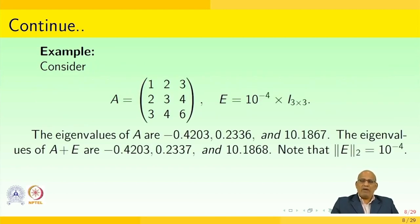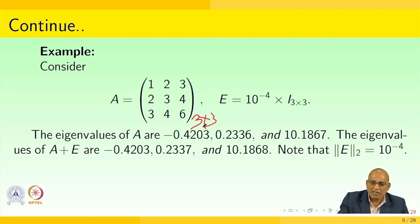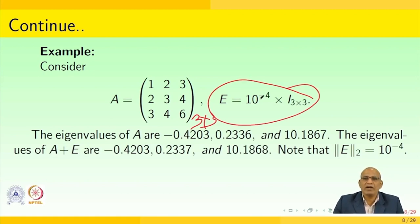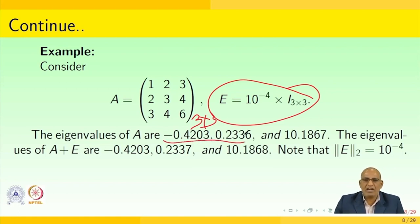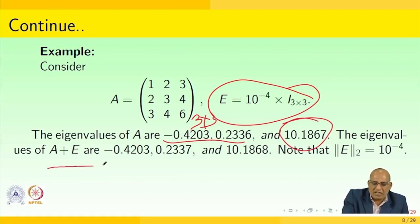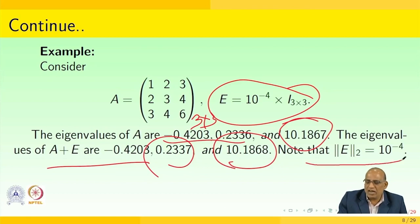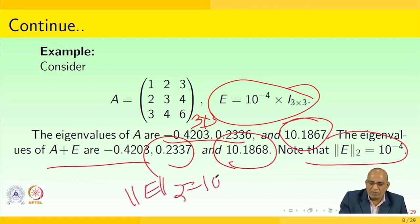To make this more understandable, let us see the following example. We consider a 3 by 3 matrix and E equals 10 to the power minus 4 times of I_{3x3}. The eigenvalues of A are minus 0.4203, 0.2336, and 10.1867. The eigenvalues of A plus E are minus 0.4203, 0.2337, and 10.1868. Note that the norm of E 2 equals 10 to the power minus 4.